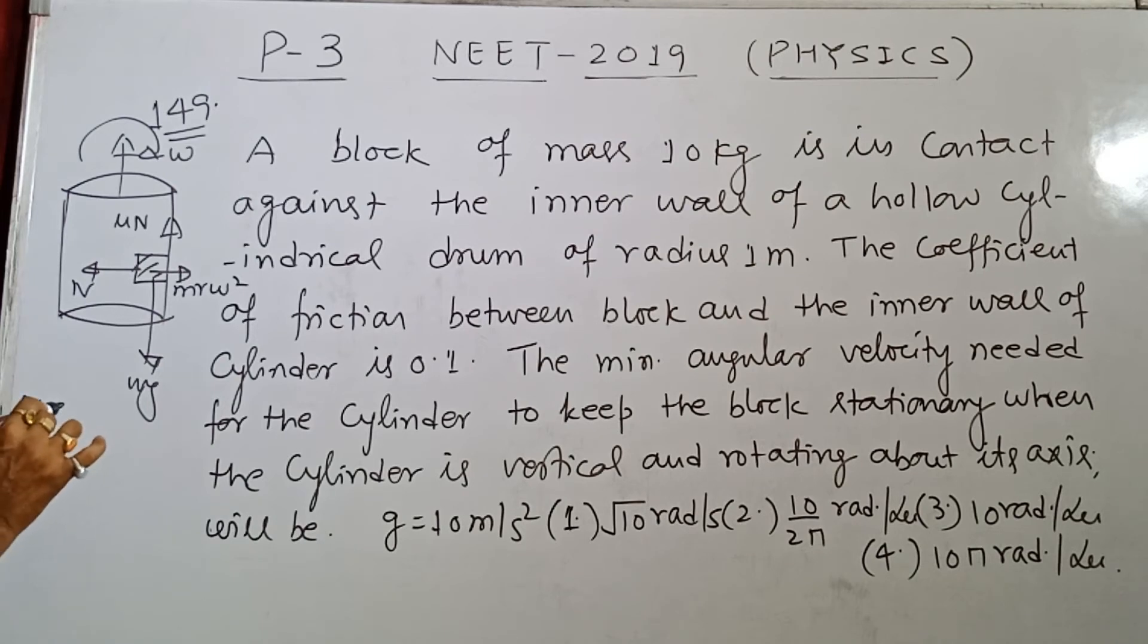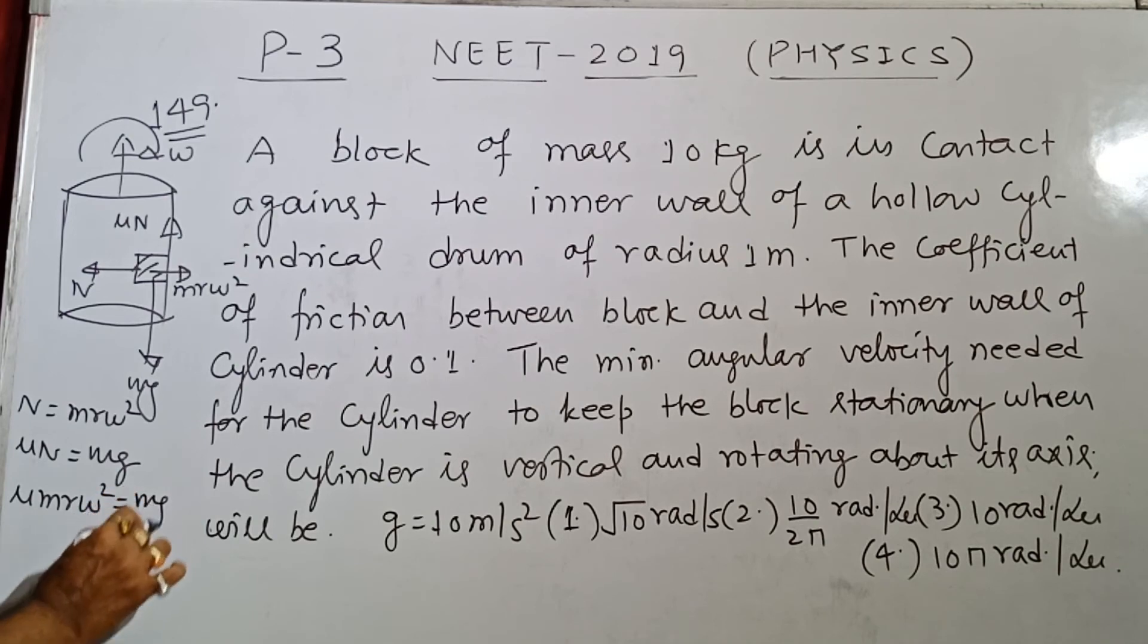Then N equals M r omega square, and Mu N equals Mg. So Mu M r omega square equals Mg.